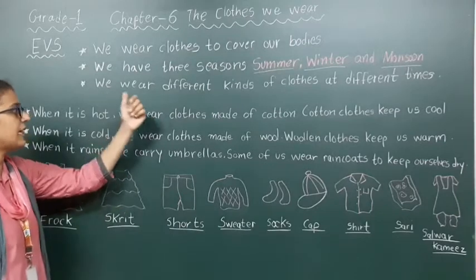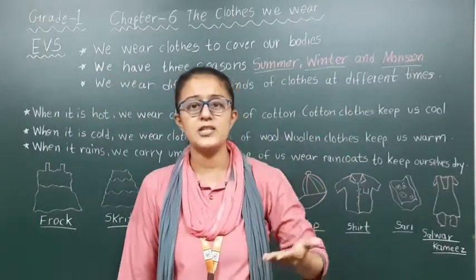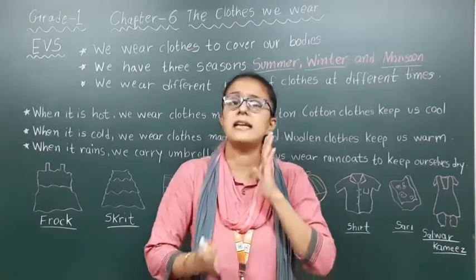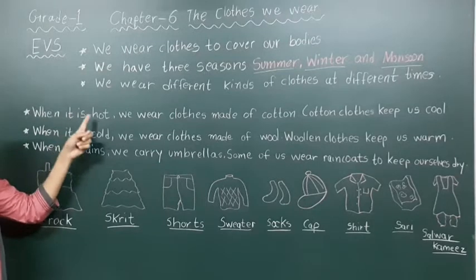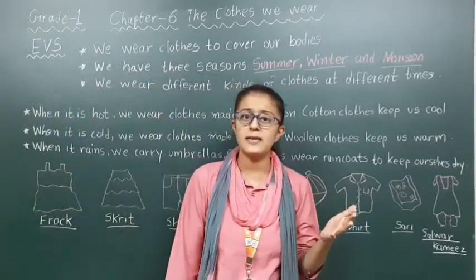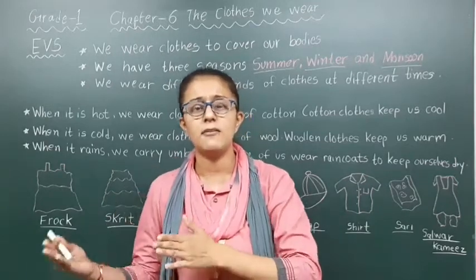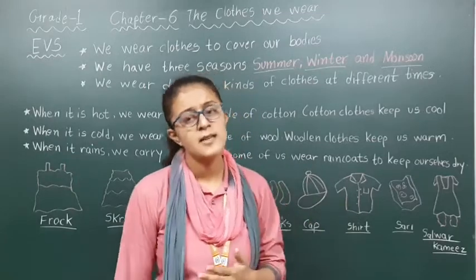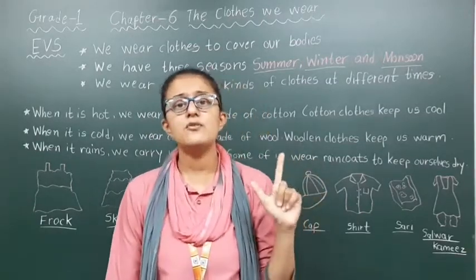We wear different kinds of clothes at different times, right? As the season and weather changes, we wear different types of clothes. When it is hot — that is, in summer season — we wear clothes made of cotton. Cotton is a material that absorbs our sweat, which is why in summer we wear cotton clothes. Cotton clothes keep us cool and we don't feel too much heat inside.